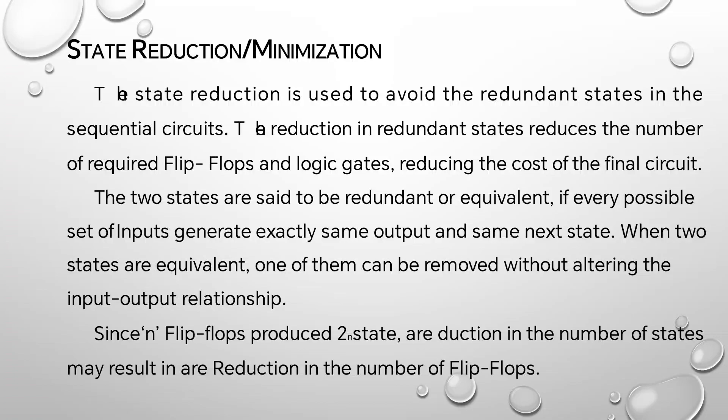When two states are equivalent, one of them can be removed without altering the input-output relationship. Since n flip-flops produce 2^n states, a reduction in the number of states may result in a reduction in the number of flip-flops.